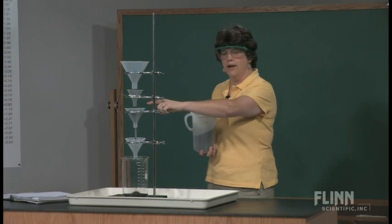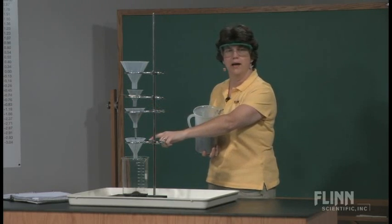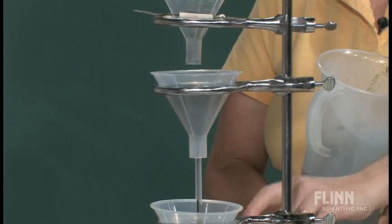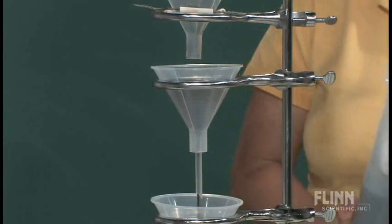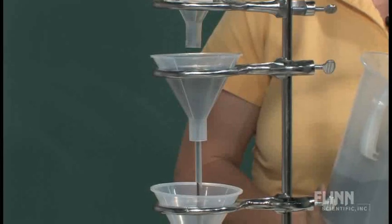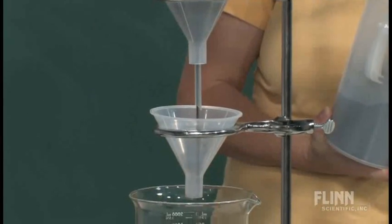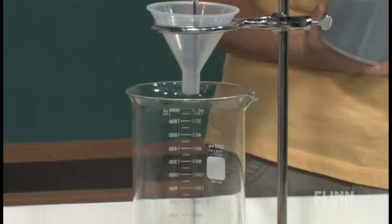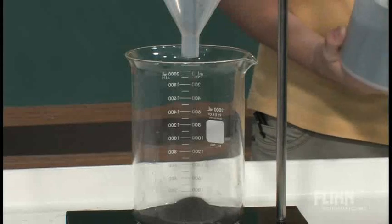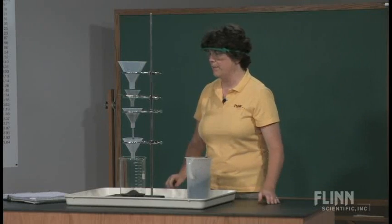And unlike a relay race, step four can't make up for that because we're not even to the capacity of step four. Step four can't do anything until step three has emptied its sand. So this is a quick way to show the rate-limiting step in a mechanism.